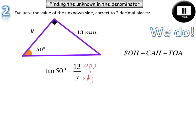Next step, can you remember what we have to do? That's right. Multiply both sides by our denominator, which is y. And then our next step is to cancel the two y's. So that leaves us with y times tan 50 equals 13. Our next step is to divide both sides by tan 50. Evaluate that and then round it to two decimal places.